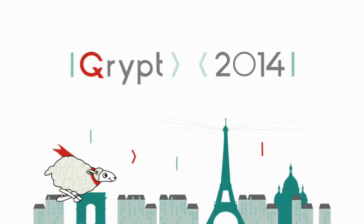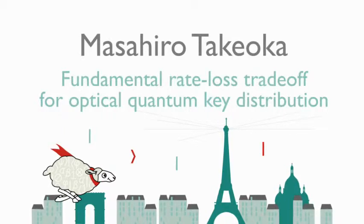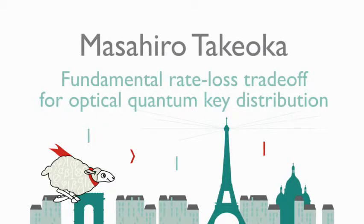First, I'd like to thank the organizers for giving me a chance to deliver a talk at this QCRYPT. This is the first time for me to attend QCRYPT. I'd like to talk about the fundamental rate loss trade-off for optical quantum key distribution. I am Masahiro Takeoka from NICT, and this is work with Saikat Guha and Mark Wilde.